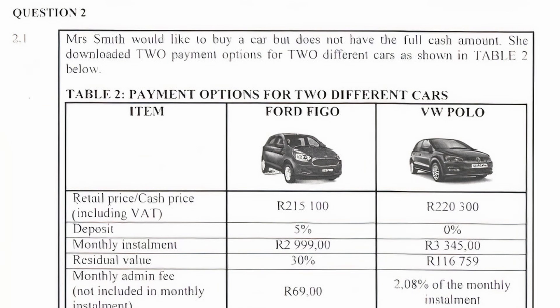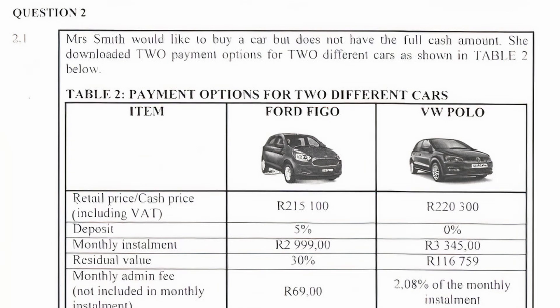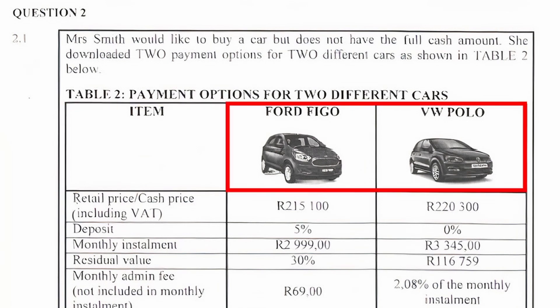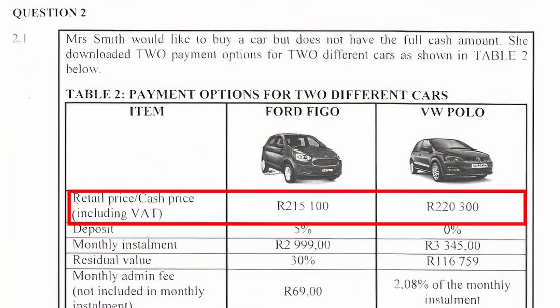When we analyze Table 2, we see that we are given three headings in the first row. In the first column, we have the heading 'Item' that lists the payment features of the two cars. The second and third columns are assigned to the two cars, that is the Ford Figo and the VW Polo. In the second row, we have the retail or cash price that includes VAT for the two cars.